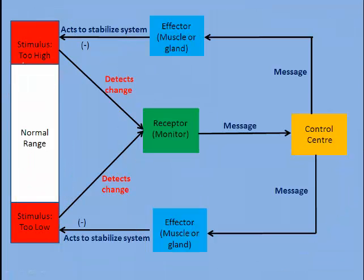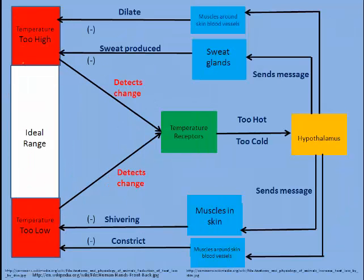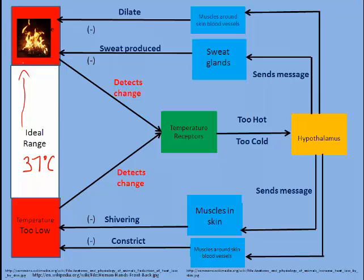Let's take a look at how this might work in the human body — let's look at temperature again. In the human body, the ideal range is somewhere in the area of 37 degrees Celsius. Suppose that we go on a nice tropical vacation; the temperature of the air is a lot warmer than what we're used to, and our body temperature begins to creep up. Temperature receptors in our skin would take note of this and send a message via nerves to the brain.